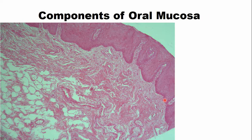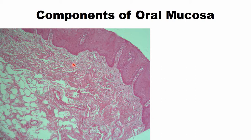The interface between the epithelium and the connective tissue is irregular — it is not a straight line. Because of this irregular interface, there are projections of the connective tissue into the epithelium.